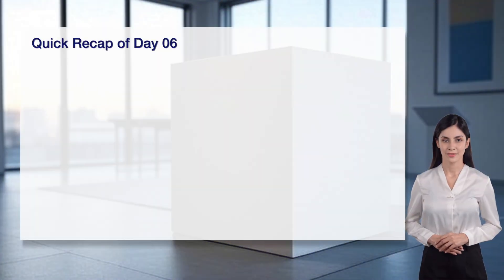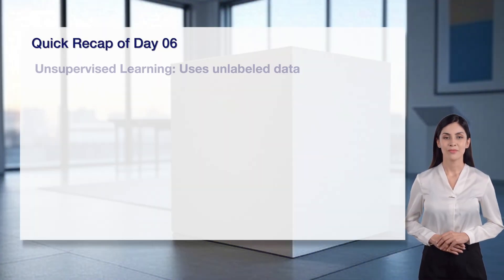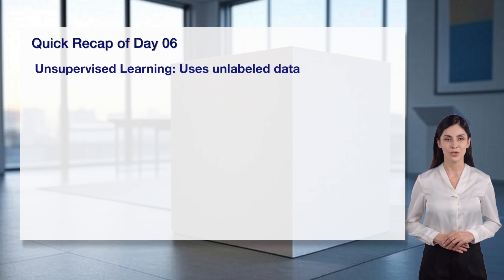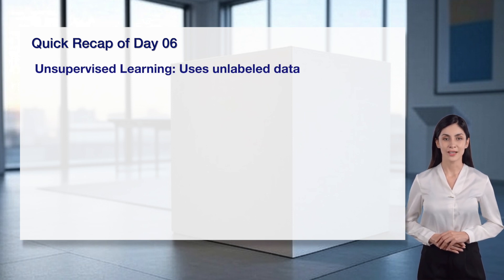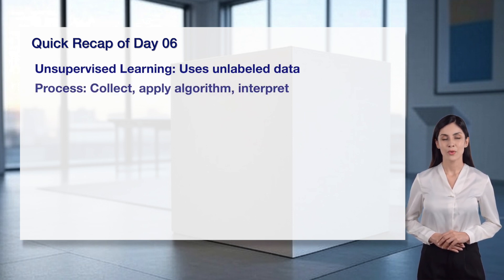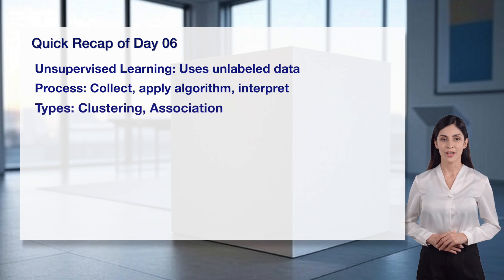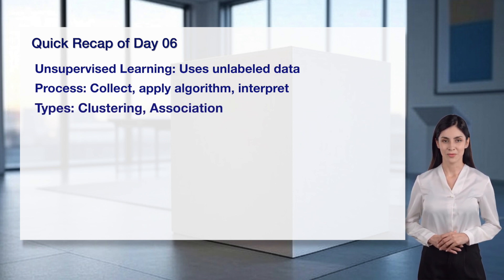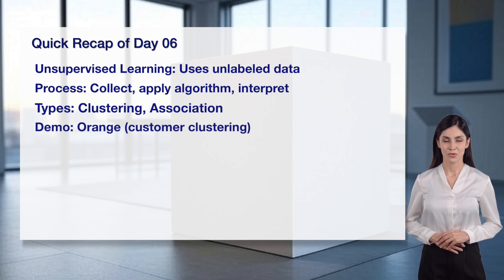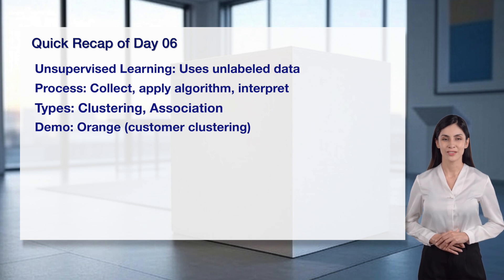Before we begin, let's recap Day 6. We learned that unsupervised learning uses unlabeled data to find patterns, following a process of collecting data, applying an algorithm, and interpreting the results. It has two types: clustering for grouping data and association for finding relationships, and we saw Sophia use Orange to cluster customers. I hope you tried the task and shared your clusters in the comments.